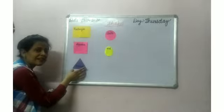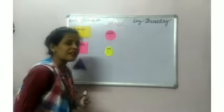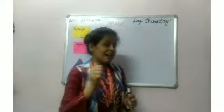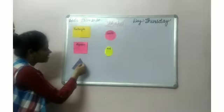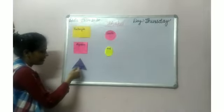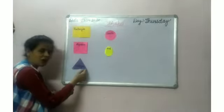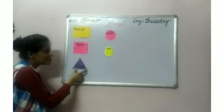Triangle. How many sides and corners does a triangle have? A triangle has 3 sides and 3 corners.